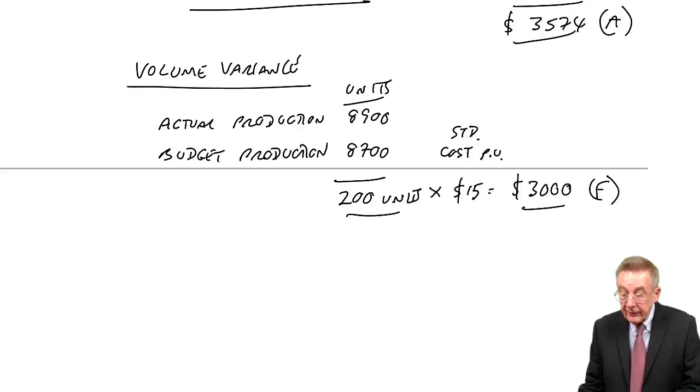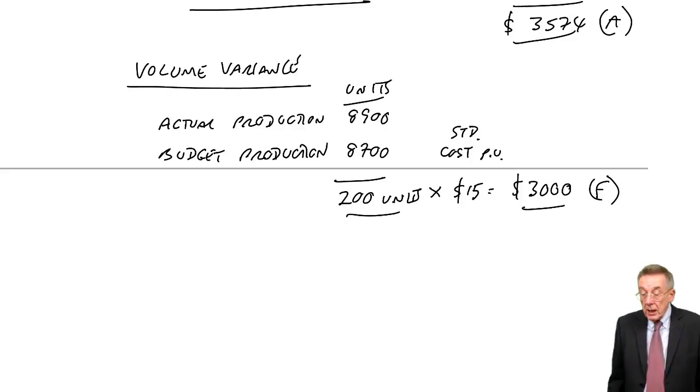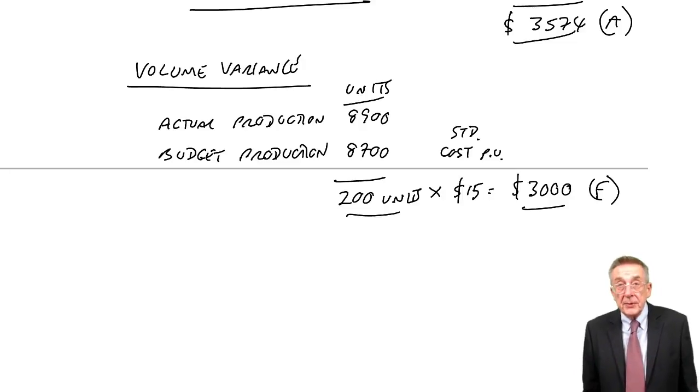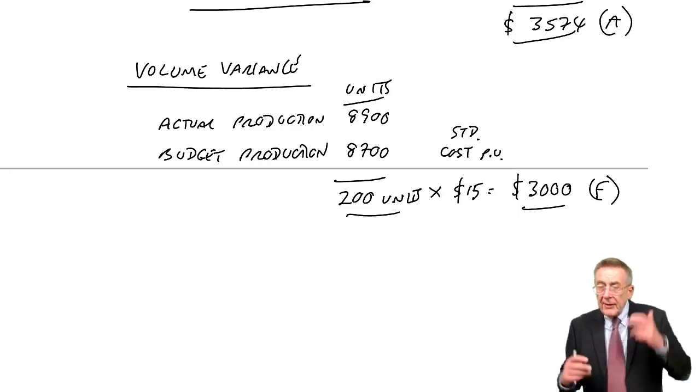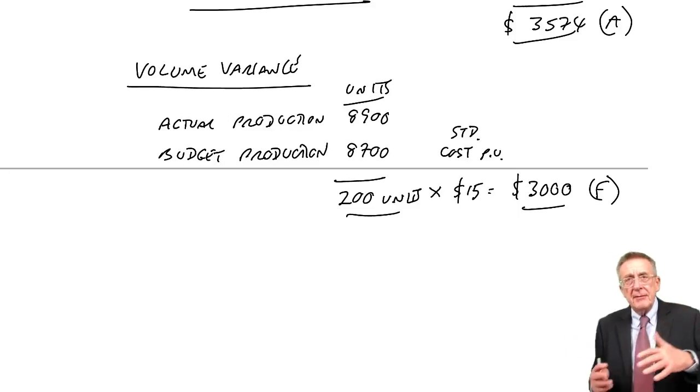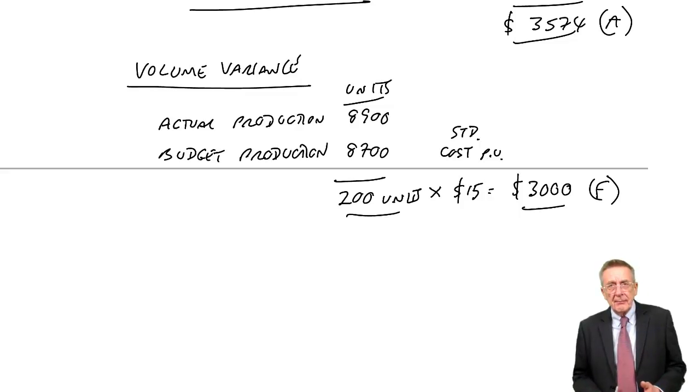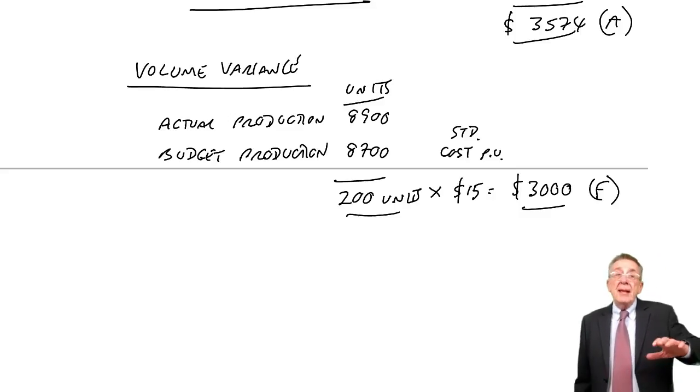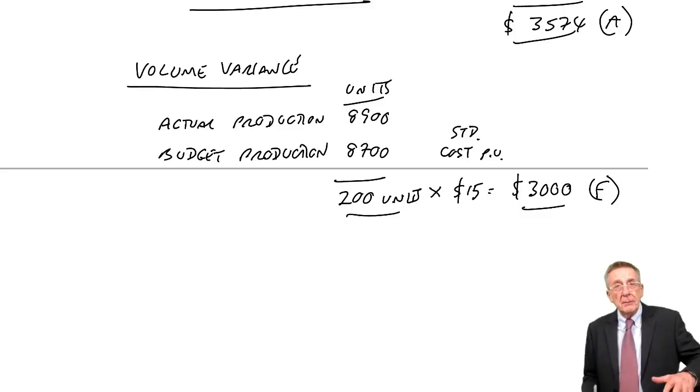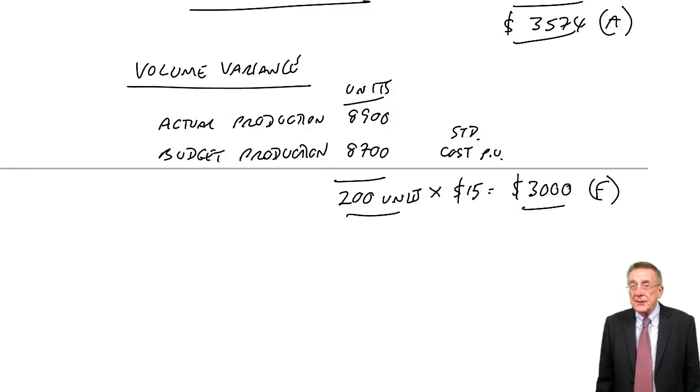Now, before I carry on, just one thing about that volume variance. It's easy to learn a rule and get the figure of 3,000. But of all the variances, this is the one that for most people, they then start scratching their heads about, oh, is it favourable? Is it adverse? You know, all the others you can make silly mistakes on. But all the others, if you think it through, it's logical. You've spent more, adverse. You've spent less, favourable.